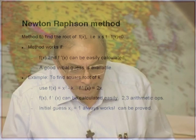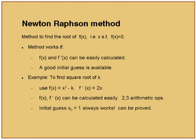The method to find roots of F(x) using Newton-Raphson: find x such that F(x) = 0. The method works if F(x) and F'(x) can be easily calculated and a good initial guess is available — those are the two important requirements. To find the square root of K, use F(x) = x² − K, so F'(x) = 2x. F(x) and F'(x) can be calculated easily with two or three arithmetic operations. For the initial guess you can take x₀ = 1, and this will always work.